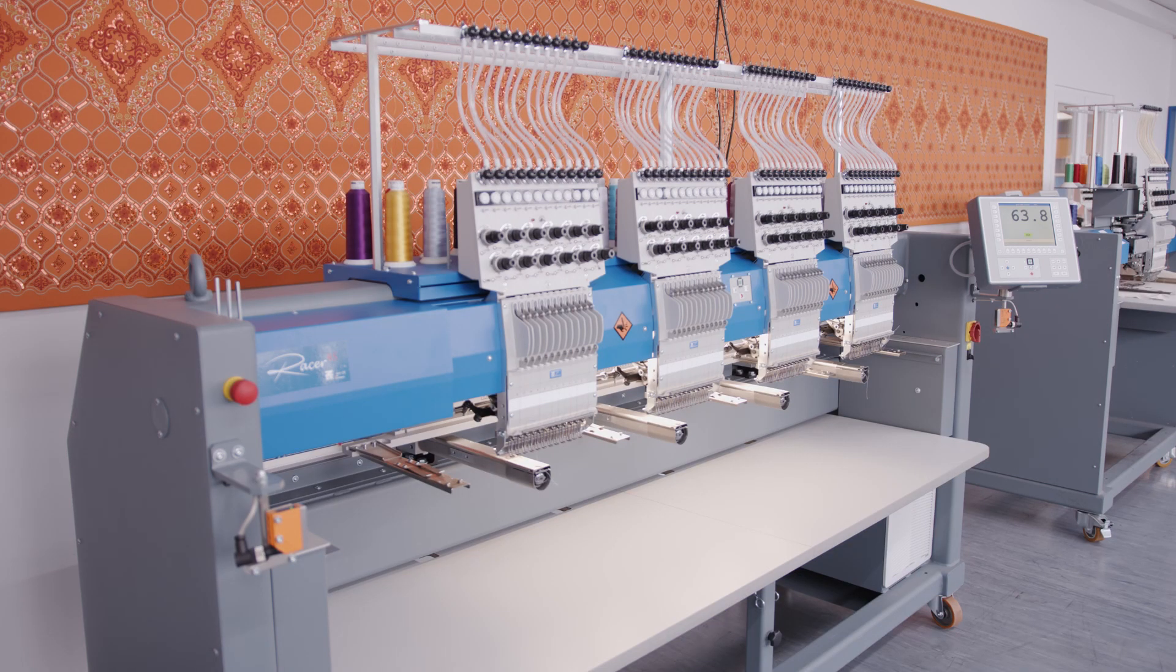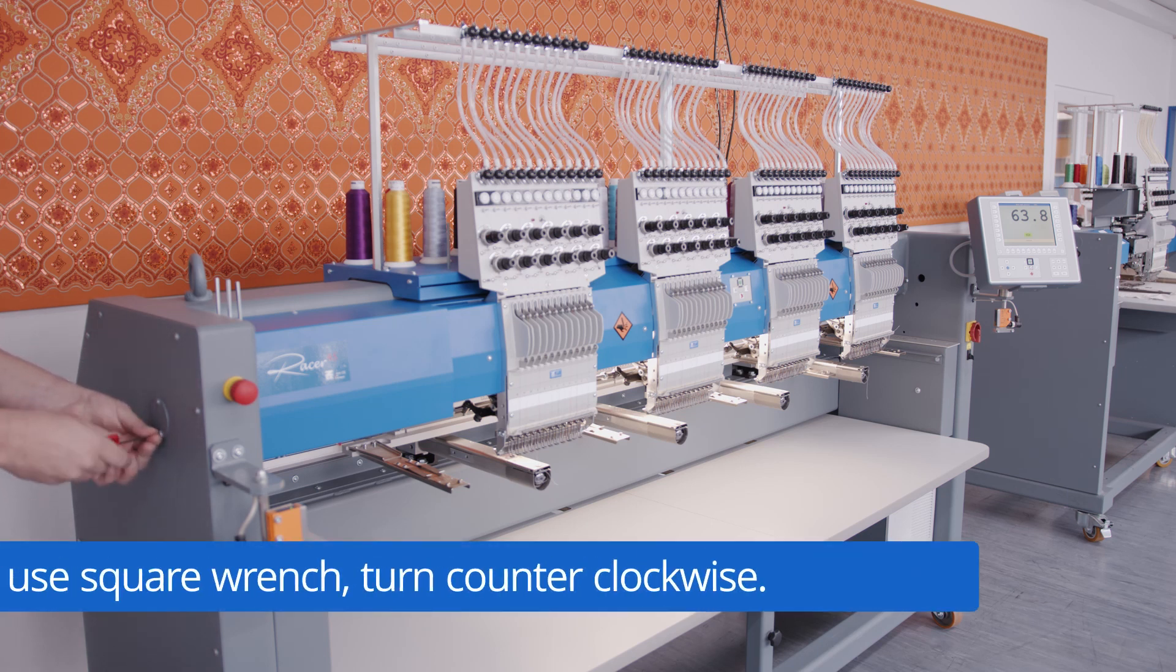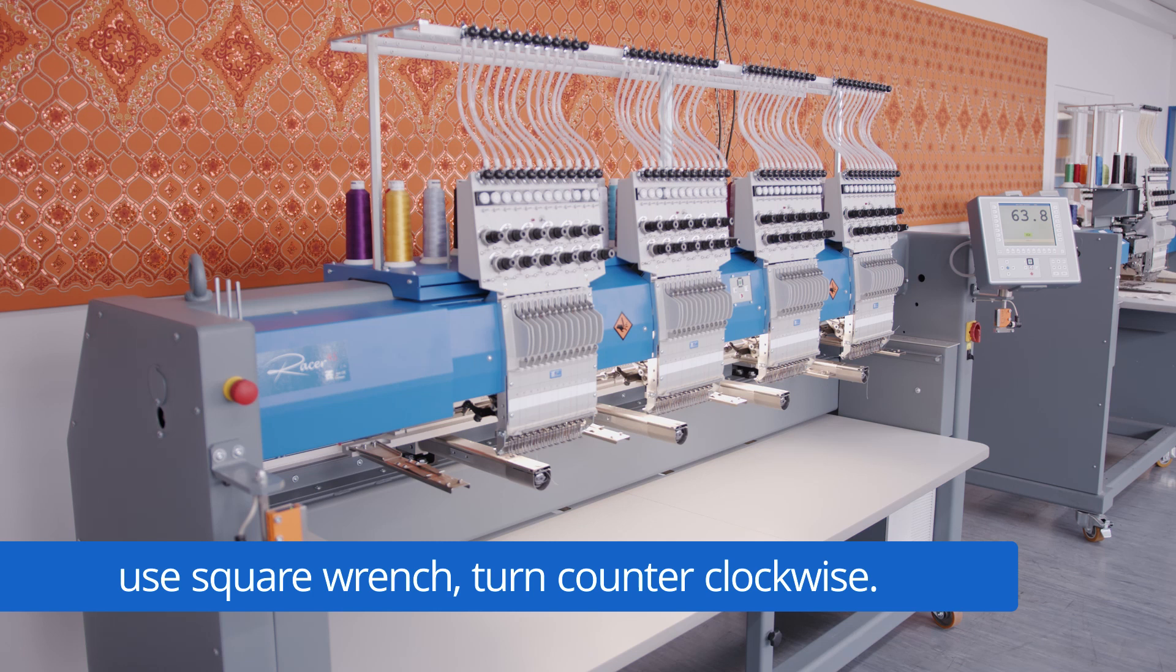After we have released the brake on the T8 we want to turn the upper shaft. Therefore we need to open the cover on the left hand side of the machine and we are using the square key that is delivered with all machines in the toolbox. It fits on the upper shaft. Here we have to turn counterclockwise because that's the running direction of the machine.